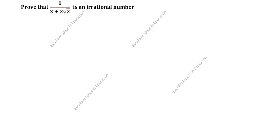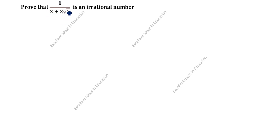Hi friends, welcome to my channel Excellent Ideas and Education. Today we are going to solve this real numbers problem: prove that 1 divided by 3 plus 2 root 2 is an irrational number. The quotient is given as 1 divided by 3 plus 2 root 2. We will rationalize the denominator.